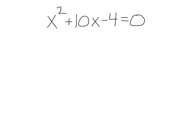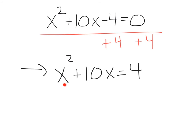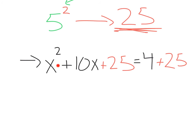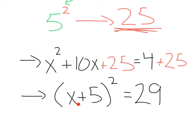Let's run through that one more time with this equation. We start by adding 4 to each side, giving us x squared plus 10x equals 4. Then we take our b term and divide by 2: 10 divided by 2 equals 5. Square that number — 5 squared gives us 25. Add 25 to each side: x squared plus 10x plus 25 equals 4 plus 25. Using the force, we get x plus 5 squared equals 29.